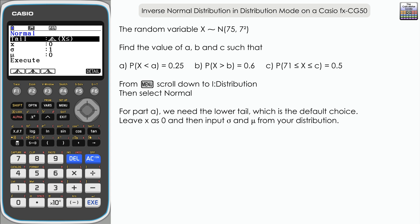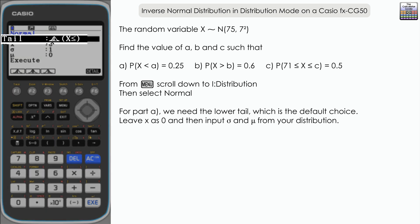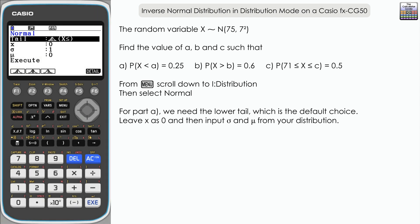As we are looking for less than, we want the lower tail. Remember, because the normal distribution is continuous, less than and less than or equal to are used interchangeably. Less than is the default tail, so I'm just going to leave that as it is.